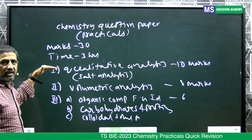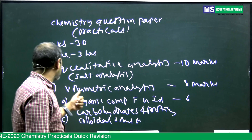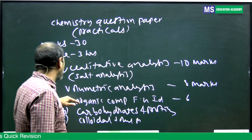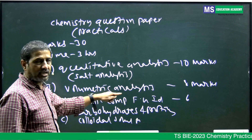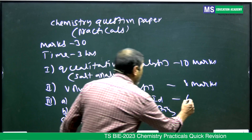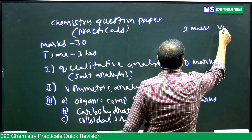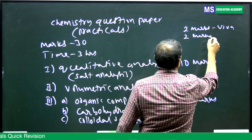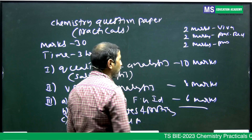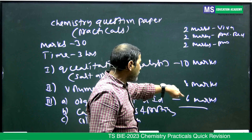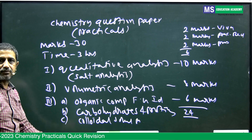So these are the questions in the practical examination: question one is qualitative analysis or salt analysis for 10 marks, question two is volumetric analysis for 8 marks, and question three — which may be organic compound functional group identification, or carbohydrates and proteins, or colloidal solution preparation (any one of the three) — is for 6 marks. Additionally, there are 2 marks for viva, 2 marks for practical record book, and 2 marks for project report. That gives 24 marks from written questions plus 6 marks, totalling 30 marks for 3 hours.